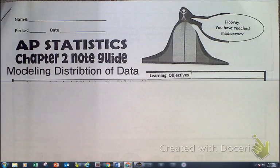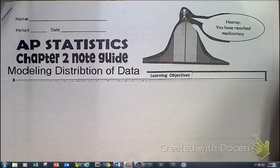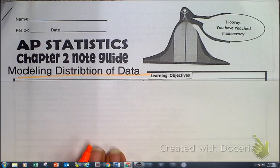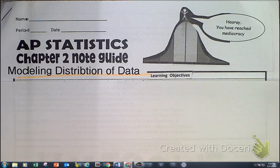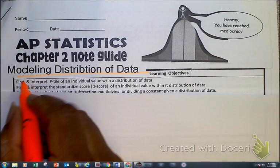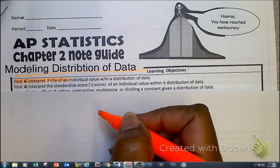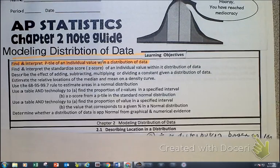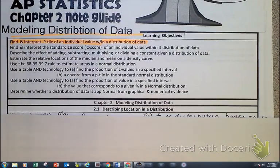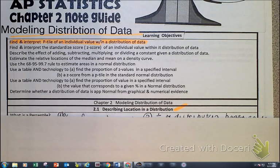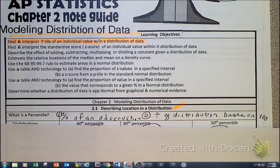I was busy trying to find something that connected us to the next chapter, which as we can see right here, we are looking at modeling distributions for data. Now let's look and see what our objectives are. For today all we're going to be doing is finding and interpreting the percentile of an individual value within the distribution of data. As we look at 2.1, we're describing locations of distributions, which takes us to the idea of a percentile.